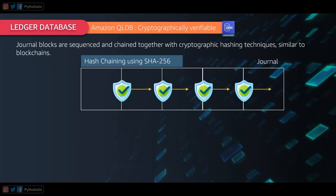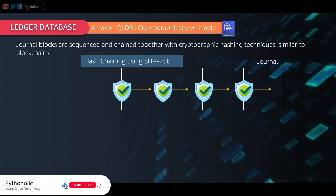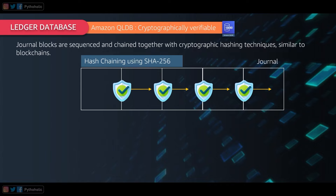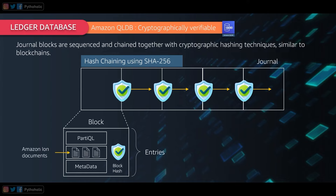We use SHA-256 hashing to generate the digest or hash value so that at every point in time you can validate the digest to ensure your data is verified and authentic. Expanding a block, you can see its actual components: the data, the metadata of your entry, and the PartiQL statement executed for transaction processing. Amazon QLDB supports a subset of the PartiQL query language. The Amazon Ion document is an abstract data model that stores both structured and unstructured data and is a superset of JSON.